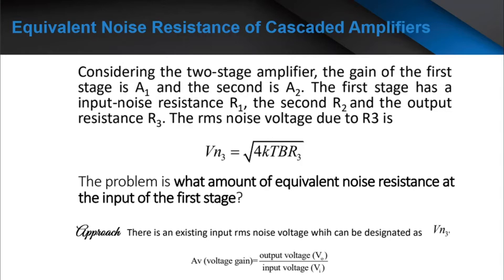The RMS noise voltage due to R3 is VN3, which is equal to the square root of 4KTB·R3. The problem is: what is the equivalent noise resistance at the input of the first stage?